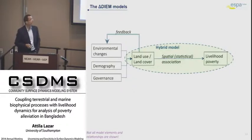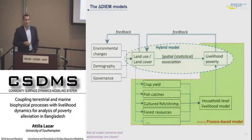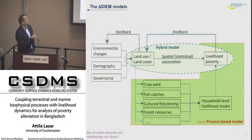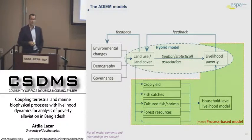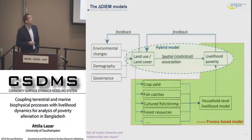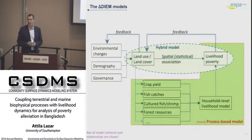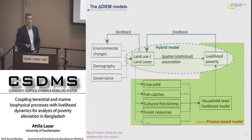The second approach is a more process-based version, where we don't stop there but apply productivity models which feed into a household-level livelihood model, giving us an indication about the well-being of the coastal population. Hopefully these two approaches will support each other, but if not, we can learn something from the differences. We will see in a year's time what is happening.